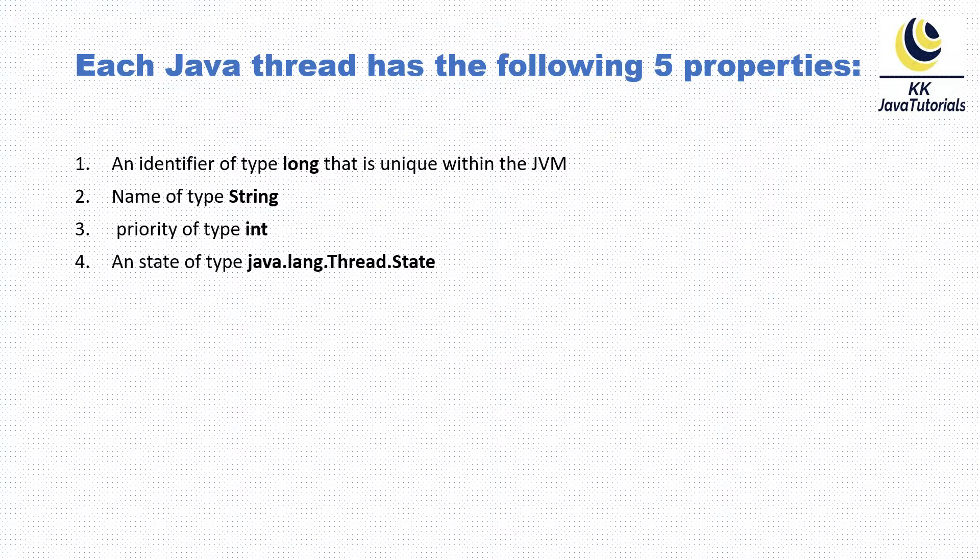Fourth property: every thread has its own state at the specific or at the given point of time. Fifth property: a group. Every thread belongs to a particular thread group and every group has a name.